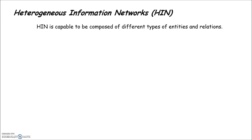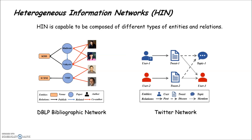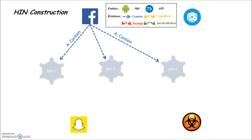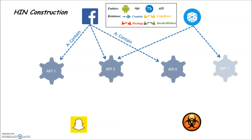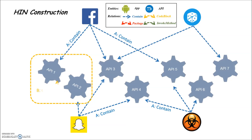To represent such rich semantics of relationships, we introduce a structured heterogeneous information network, or HIN, to depict apps and APIs, since HIN is able to handle different types of entities and relations. Relations between APIs and apps and different types among apps can introduce higher-level semantics and require more effort for attackers to evade detection.